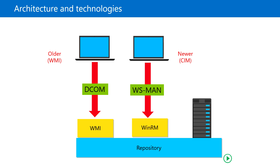WMI commands use the same repository as CIM commands, but the way they connect to the repository uses different protocols. The key difference is how WMI commands connect to the remote computer — WMI uses the DCOM protocol, while CIM uses WSMAN. WMI commands do not support session-based connections like CIM technology does, and WMI also supports ad-hoc connections over DCOM.